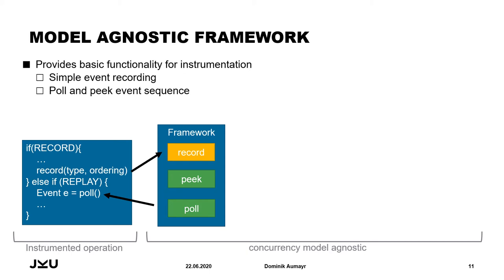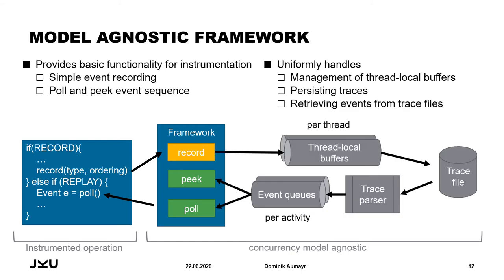For instance, if you look at the code to the left, you can see that in an instrumented operation there are typically two conditional code sections: one for recording and one for replay. In the recorded execution, an ordering is established and then the record method is called. In a replay execution, pull and peek operations can be performed to obtain information about the next event, which can then be used to reproduce the original ordering. Data passed to the record method is stored in a thread-local buffer and eventually persisted to the trace file. Similarly, in replay, the framework handles trace parsing and lazily fills the event queues accessed by the peek and poll methods.